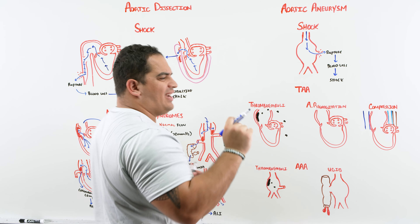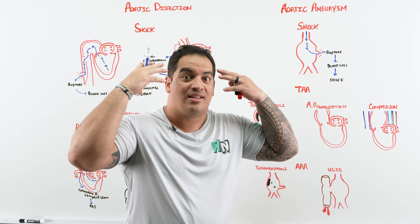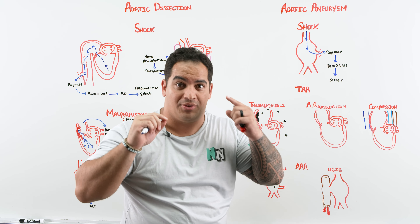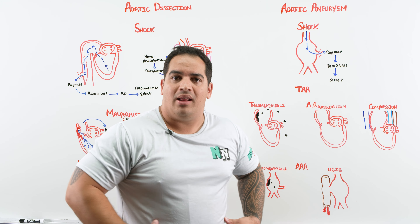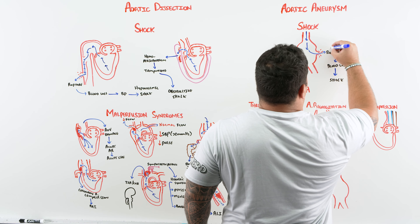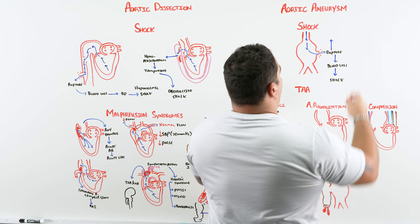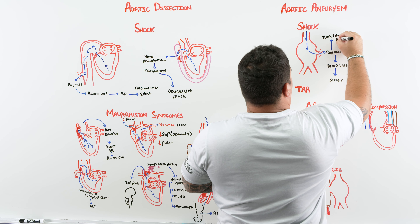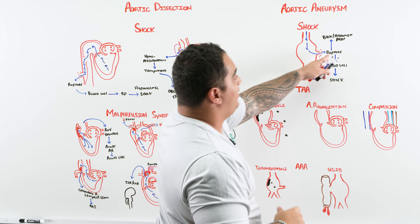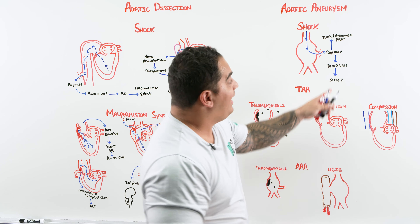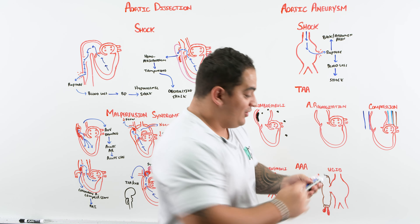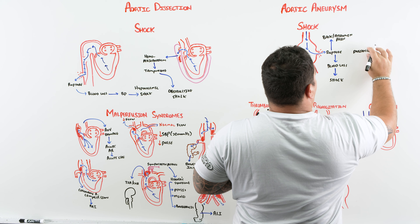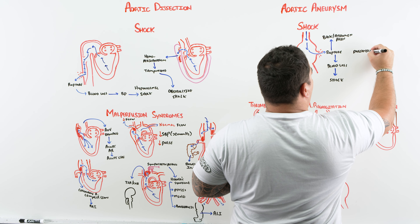When the aneurysm ruptures, there's usually a sentinel sign — similar to how subarachnoid hemorrhage presents as a thunderclap headache. For an abdominal aortic aneurysm, the patient will present with back pain or belly pain coinciding with the rupture. You should also look for a pulsatile abdominal mass on exam.